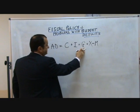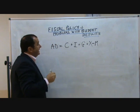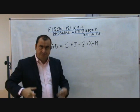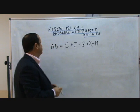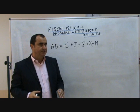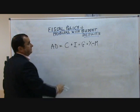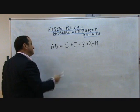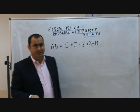So, aggregate demand is consumption, investment, government spending, and net export earnings. If the government wants to manipulate aggregate demand — perhaps to boost it if the economy is lagging or there's a recession, or perhaps to reduce it because the economy is overheating and there's a danger of inflation — it can do so by changing its own government spending and by influencing consumers' ability to spend by changing tax rates.